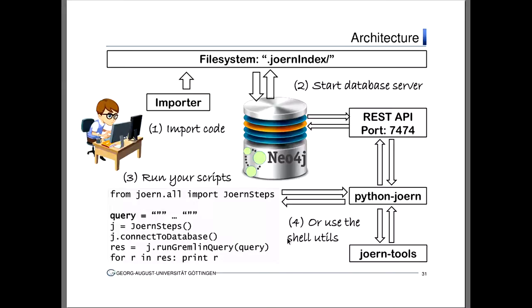Let's take a quick look at what this tool looks like. You have an importer — you start to import code. It creates a database called 'joern index,' which is stored in the graph database. Then you start the database server, which makes a REST API accessible. To make sure you never see the web stuff underneath, I wrote a library called Python JOERN that you can include in your scripts — it communicates with the REST API for you. This is a complete working script except for the query: you connect to the database, run the query, print the results. That's all.